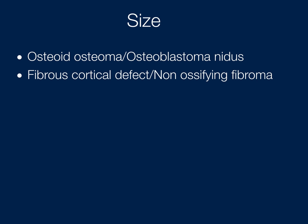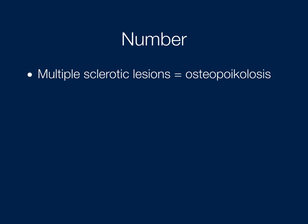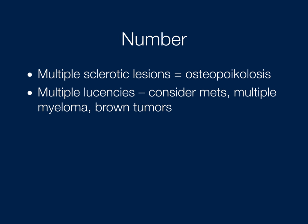With enchondroma and chondrosarcoma, it's not strictly size-dependent, but size can sometimes help suggest chondrosarcoma if the lesion is larger. Regarding number of lesions: multiple sclerotic lesions can be seen in dysplasias such as osteopoikilosis. Multiple lucencies should prompt consideration of metastatic disease, multiple myeloma, or brown tumors — even if they're well-defined, if there are many of them, you have to consider these diagnoses.